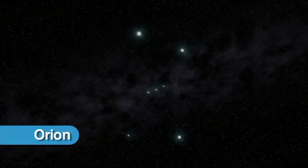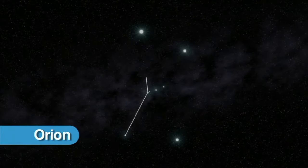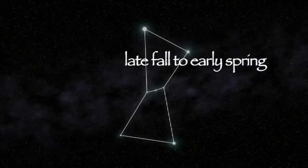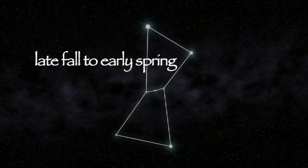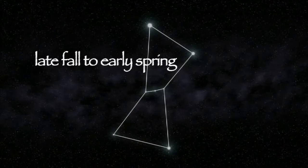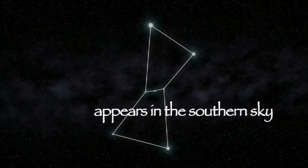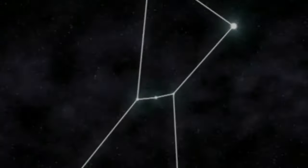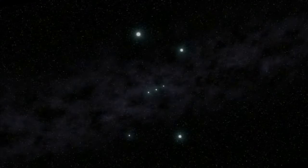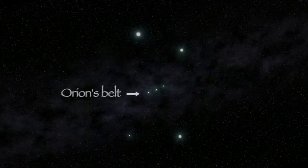Orion the Hunter is one of the easiest winter constellations to find. He is visible from late fall to early spring. He appears in the southern sky. Look for three stars on a slight curved line. These stars form Orion's belt.